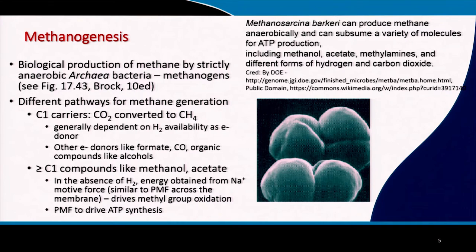There are different pathways for methane generation. If you have a C1 compound, CO₂ is converted to methane depending on the availability of hydrogen as an electron donor. Other electron donors include formate, carbon monoxide, and organic compounds like alcohols. You can also have other C1 compounds like methanol and higher carbon-containing compounds. If hydrogen is not present, energy can be obtained using sodium, giving sodium motive force instead of proton motive force, which can drive methyl group oxidation.